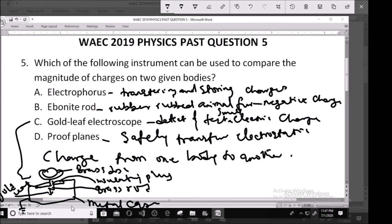This metal case in the gold leaf electroscope is normally connected to the earth. So we call it earthed, to prevent the accumulation of charges due to external influence.